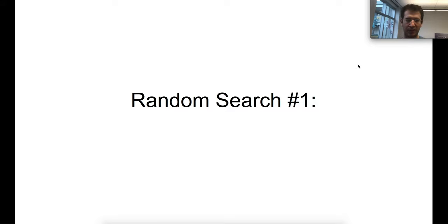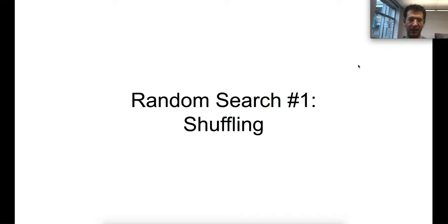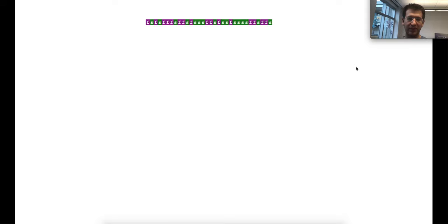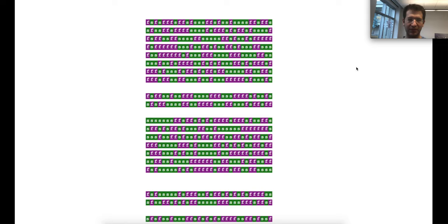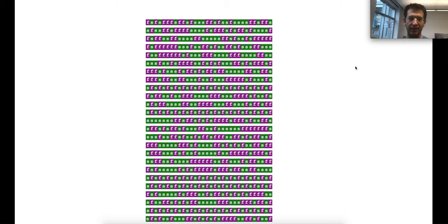We ran two random searches. In our first random search, called 'shuffling,' we take the original baseline model — which has 16 self-attention and 16 feedforward sublayers — and just shuffle those 32 sublayers to produce a new random model. We trained 20 of those shuffled transformers on the WikiText-103 dataset, and also trained five baseline models with five different random seeds to get an accurate reading of baseline performance.